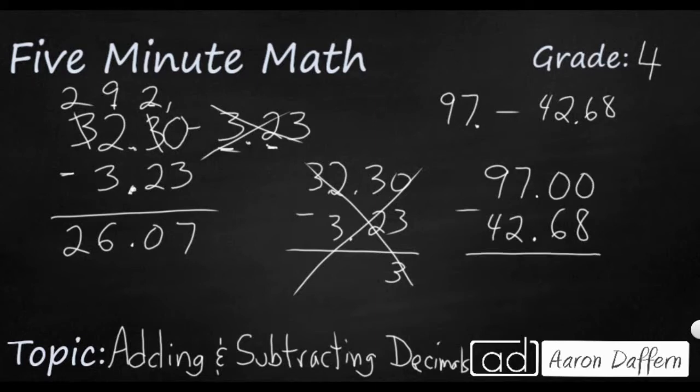Now it's going to be subtracting across zeros. So this one is going to be broken up into ten tenths. I'm going to take one of those tenths, leave nine, break it up into ten hundredths. Now I could do this. That's going to be three, and that's four, and that's five.